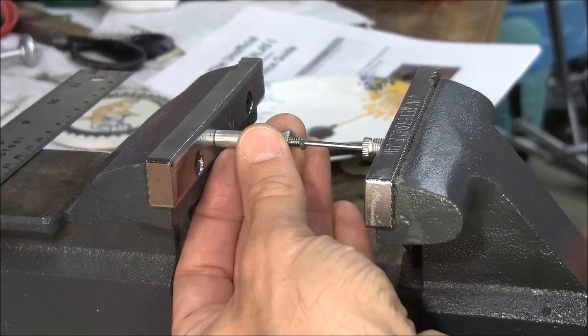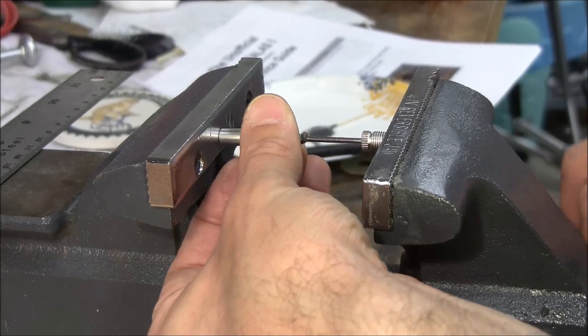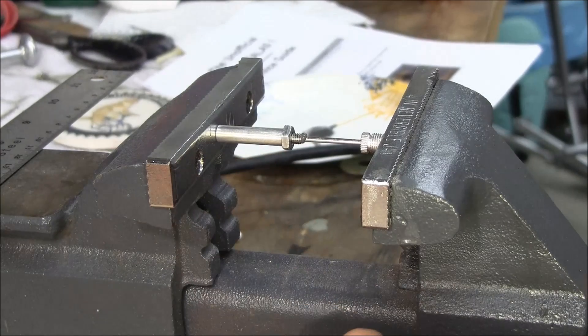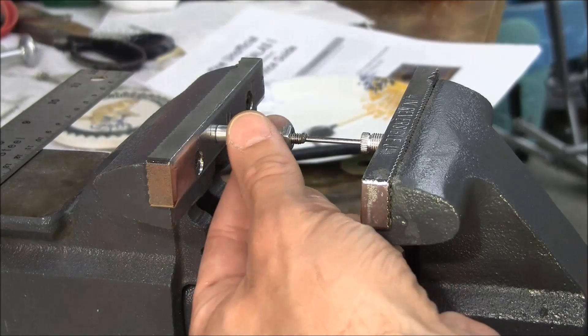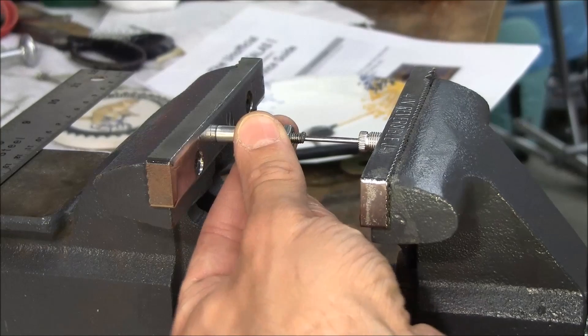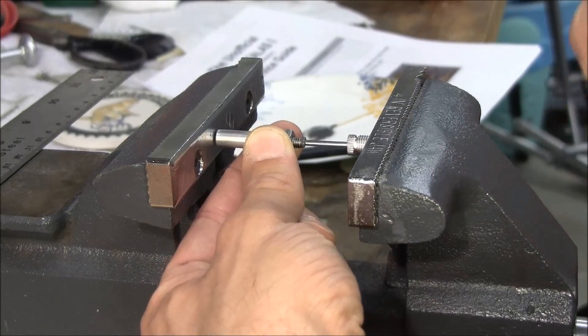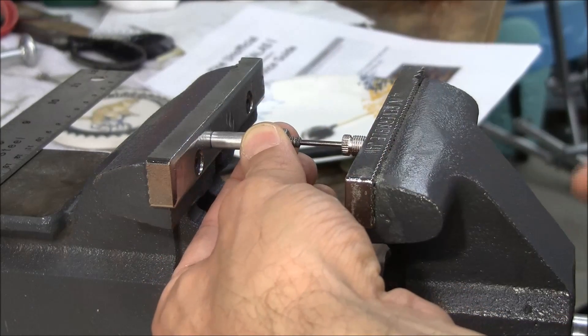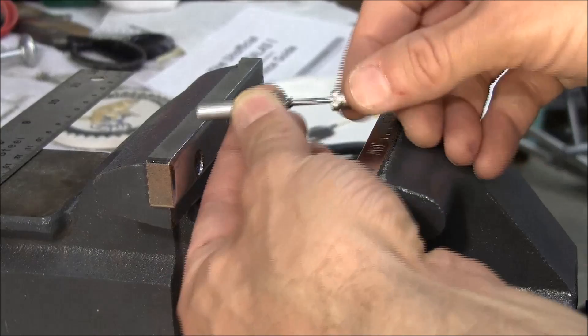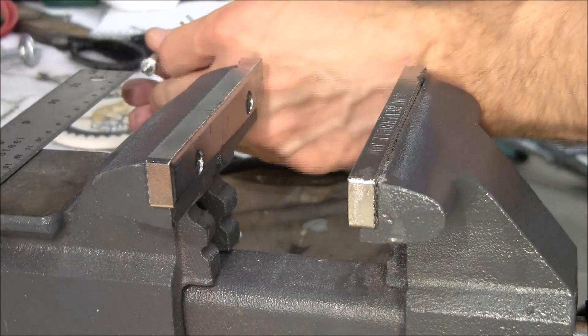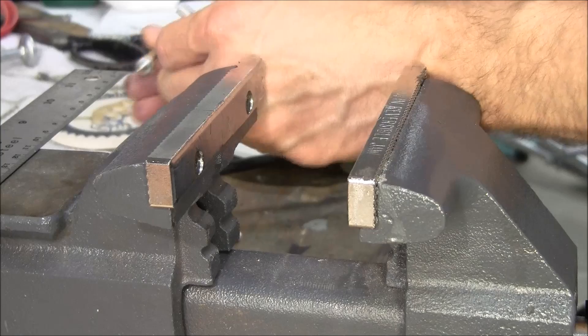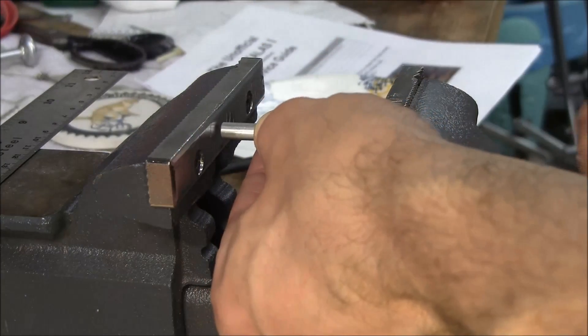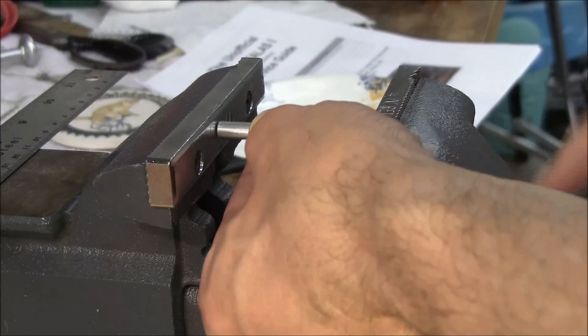And we're going to slowly press fit the needle into the set screw. We want the needle to stick out about 6 millimeters from the end of the set screw. So we're going to take it off frequently and check it against a ruler. It doesn't have to be exact, but the closer to 6 millimeters, the better the luck I've had.